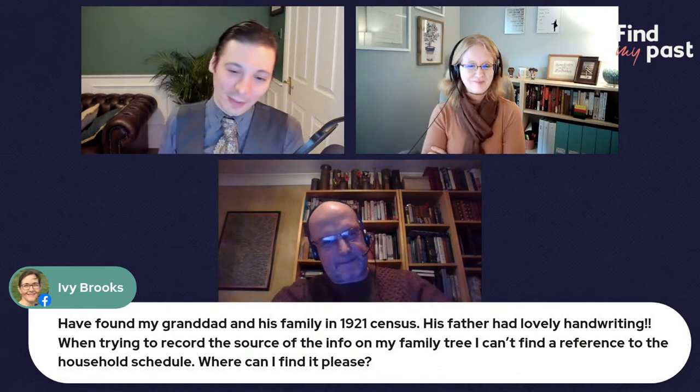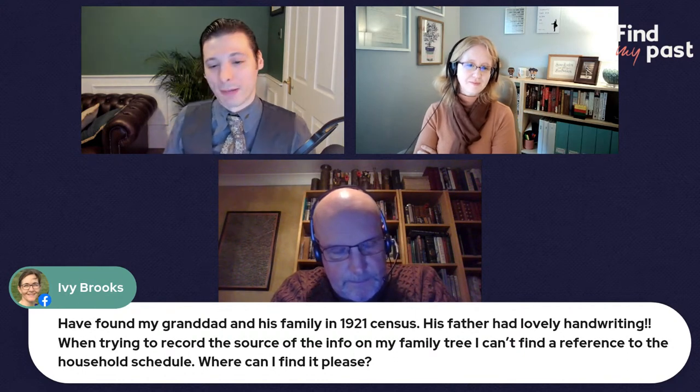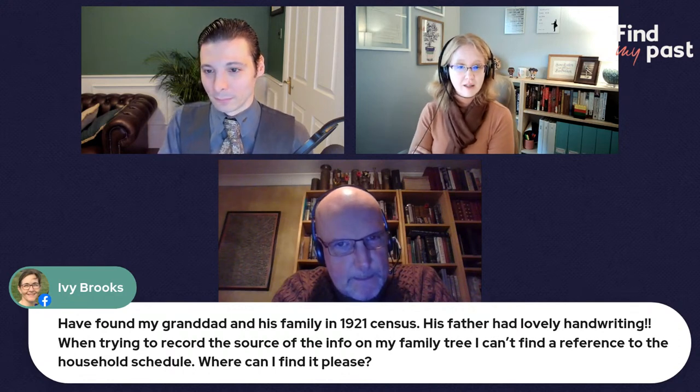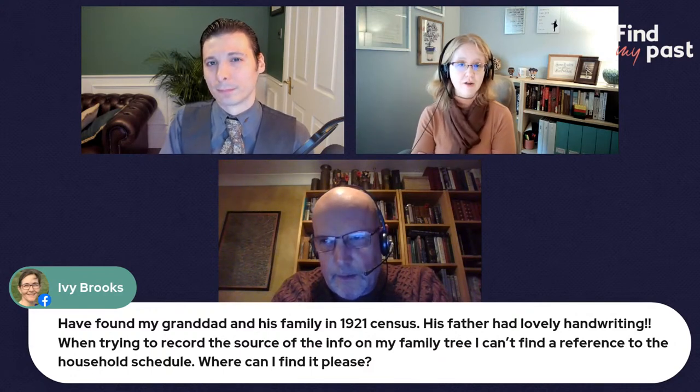A question from Ivy: I found my granddad and his family in the 1921 census — his father had lovely handwriting. When trying to record the source for my family tree, I can't find a reference to the household schedule. Where can I find that? It's certainly in the transcription, and also if you've purchased the image, it's in the extra materials on the front — the image of the cover of the book — itself. There's a reference number on the cover of the book. Look at those extra materials, make sure you get all the images attached to your household return, and note your citation from those pieces of information.